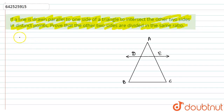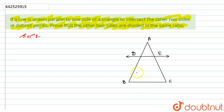So let's start with the solution. First of all, we have a triangle — let this be triangle ABC. This is the line DE which is parallel to one side of the triangle, that is BC, and it is intersecting the other two sides of the triangle, that is AB and AC.